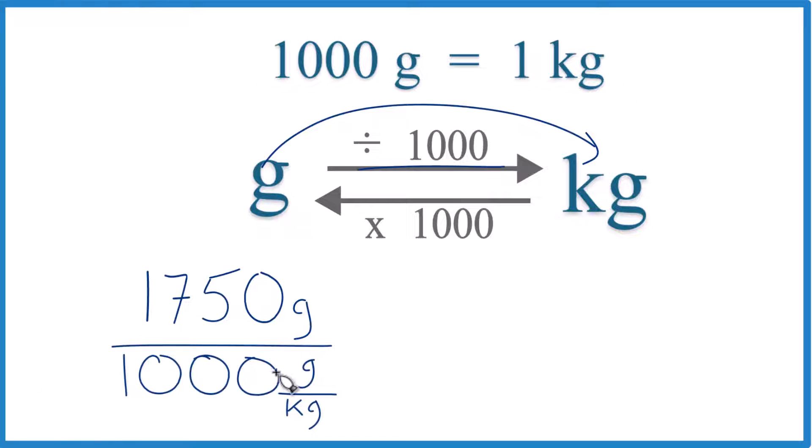And note, we have 1,000 grams per kilogram here. So this is our conversion factor. Since we have grams on the top and the bottom, they cancel out. We're left with kilograms, so we know we did this right.